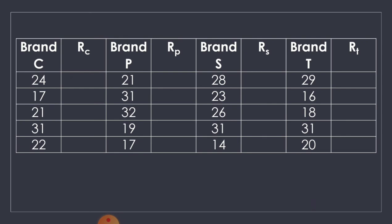Going back to the original data, for Brand C we have 24, 17, 21, 31, and 32. We indicate their corresponding ranks: R sub C. So 24 is rank 12, 17 is rank 3.5, 21 is rank 8.5, 31 is rank 17.5, and 32 is rank 10. The sum of the ranks of Brand C, summation of R sub C, is equal to 51.5.